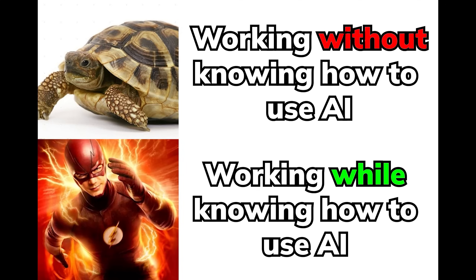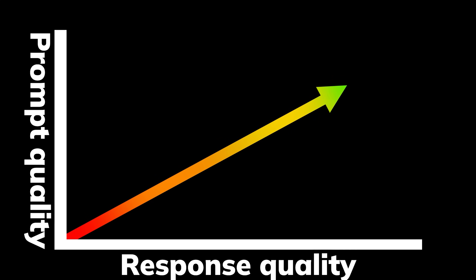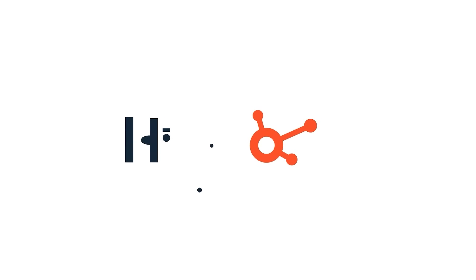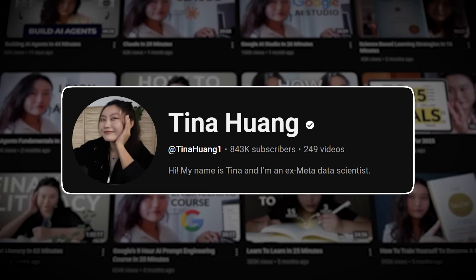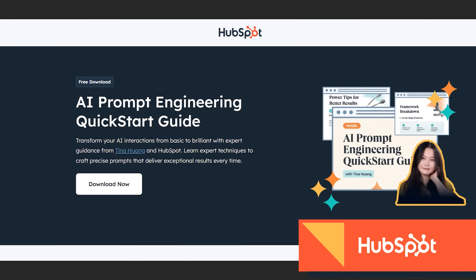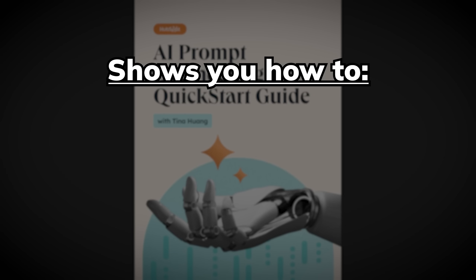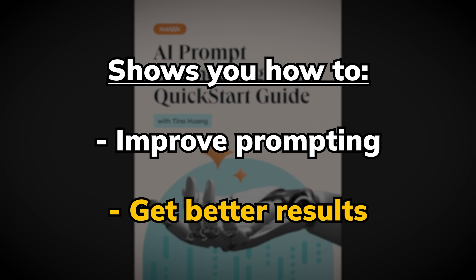But before we dive into it — with AI tools becoming essential for productivity but often delivering underwhelming results, mastering how you communicate with it is an important step for improving your work efficiency in 2025 and beyond. That's why I'd like to share this free resource from HubSpot, created in partnership with ex-metadata scientist and full-time YouTube creator Tina Huang, called the AI Prompt Engineering Quick Start Guide. This is a practical guide that explains how to transform your AI interactions from basic to brilliant and shows you how to craft precise prompts that deliver top-tier results every time.